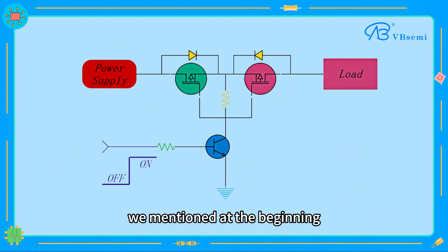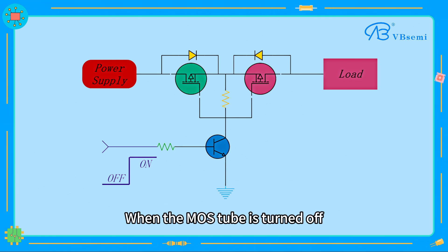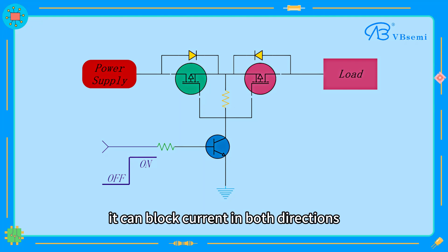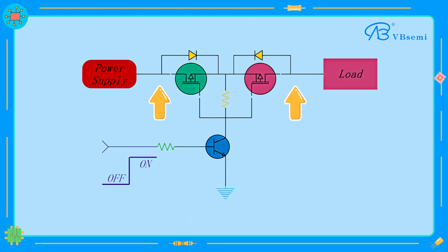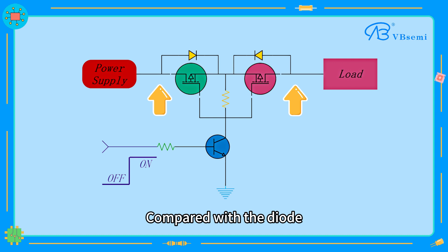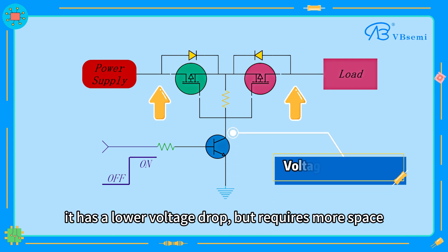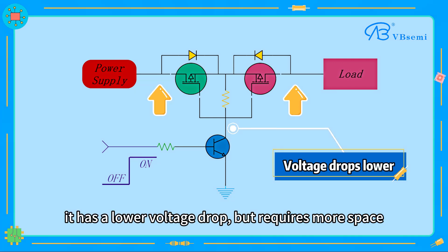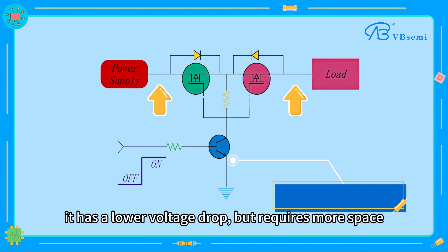The second method is back-to-back MOSFETs, as mentioned at the beginning. When the MOSFET is turned off, it can block current in both directions. Compared with the diode, it has a lower voltage drop, but could require more space.